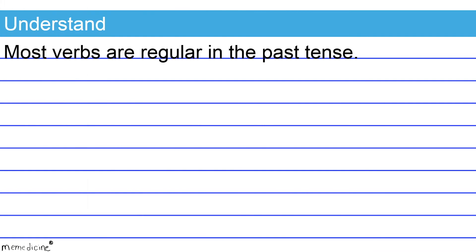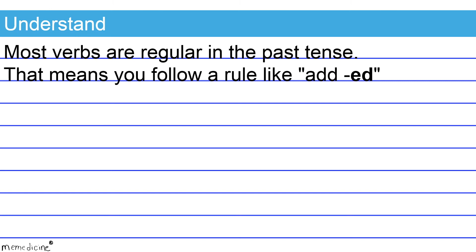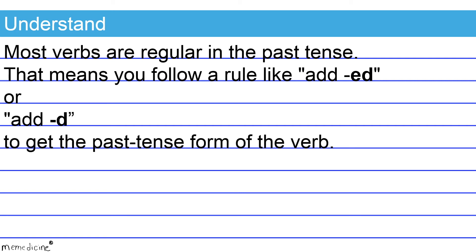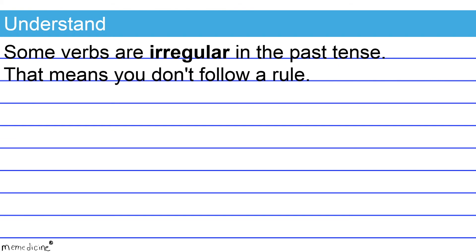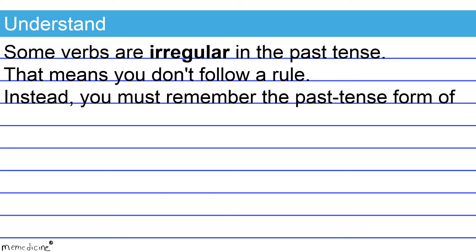Here's what I need you to understand. Most verbs are regular in the past tense — that means you follow a rule, like adding -ed or -d, to get the past tense form of the verb. Some verbs are irregular in the past tense, meaning you don't follow a rule. Instead, you must remember the past tense form of the verb.